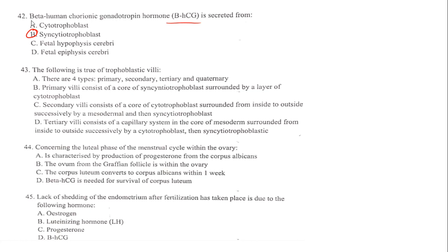The following is true of trophoblastic villi: trophoblastic villi are formed when the capillary system is present. The answer is the tertiary villi. There are different types of trophoblastic villi — primary villi, secondary villi, and tertiary villi. The coton does not exist.